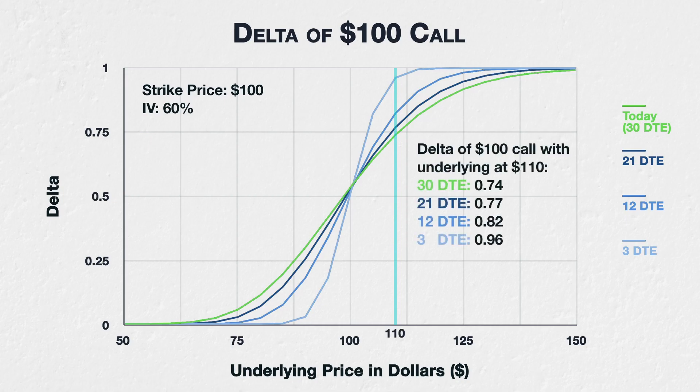With 30 days it's 0.74, with 21 days it's 0.77, with 12 days it's 0.82, and with 3 days it's 0.96. Because at an underlying price of $110, the $100 call option is in the money, the delta approaches 1 as time passes.